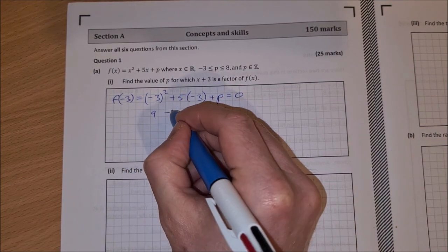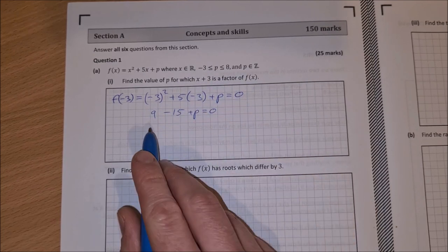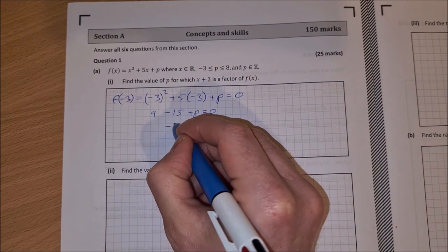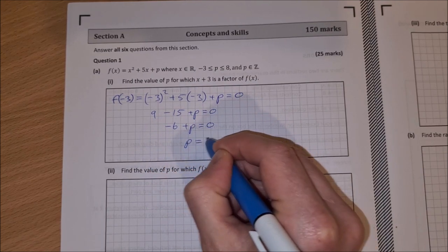5 times minus 3 is minus 15, plus p is equal to 0, 9 minus 15 is minus 6, plus p is equal to 0, therefore p is equal to 6.